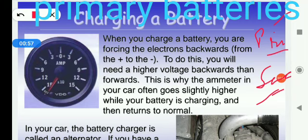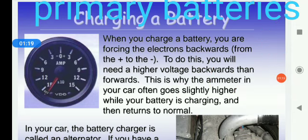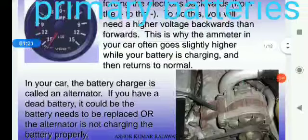Now, charging a battery. How can we charge a battery? When you charge a battery, you are forcing the electrons backwards. To do this, you will need a higher voltage backwards than forwards. This is why the voltmeter in your car often goes slightly higher while your battery is charging, and then returns to normal.